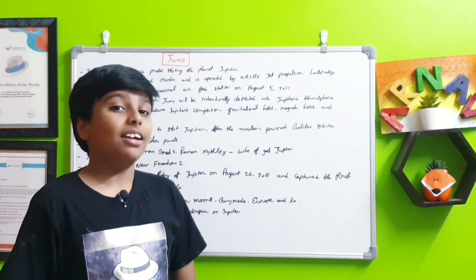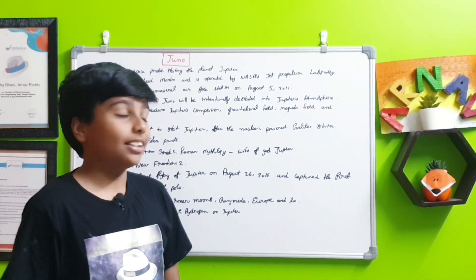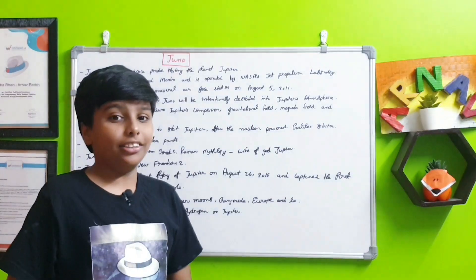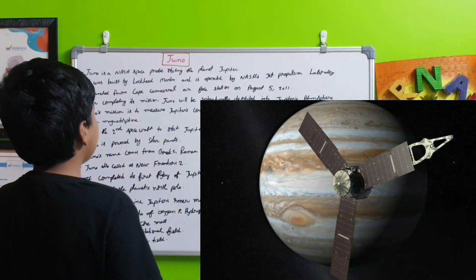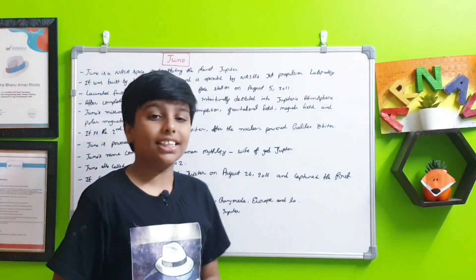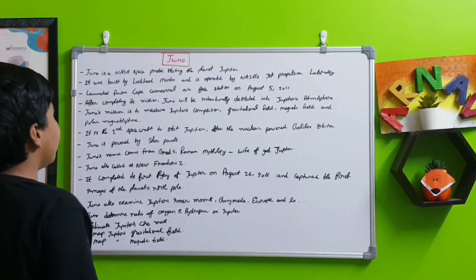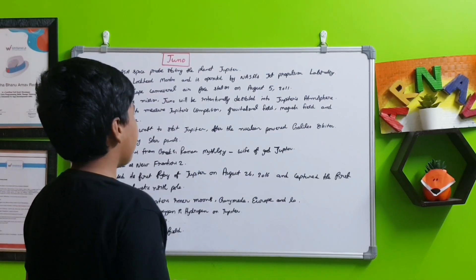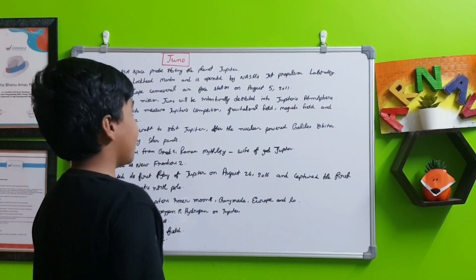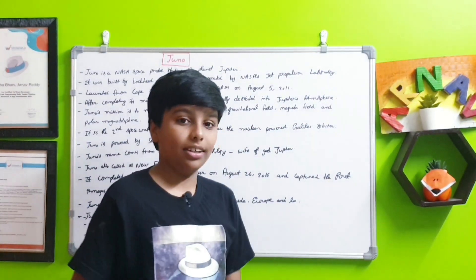Today we are going to discuss another space probe that is known as Juno. Juno is a NASA space probe that is presently orbiting around the planet Jupiter. It was built by the Lockheed Martin company and is presently operated by NASA's Jet Propulsion Laboratory.